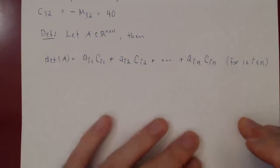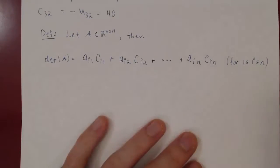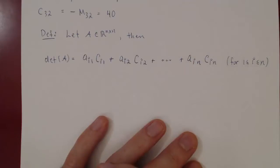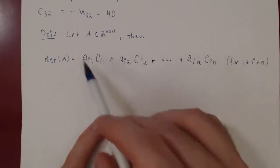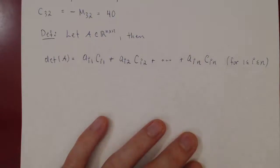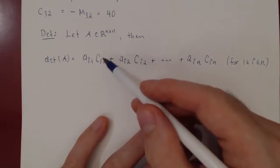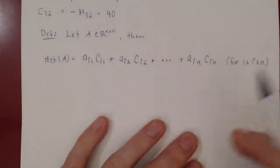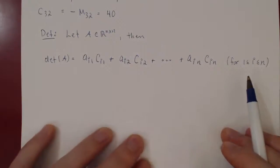Since we have an n by n matrix, i can be anything from 1 to n. If you multiply each entry of the chosen row by the corresponding cofactor and add those up, you have the determinant.